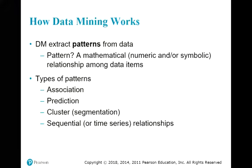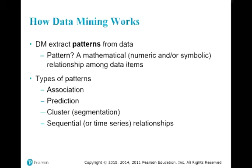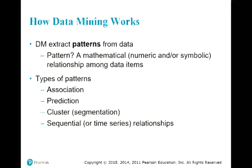So what kinds of methods are used in data mining or predictive analytics? There are basically four types. The first is association — you can also use the term correlation. There are also prediction models, and most prediction models including many econometrics models are derived from regression. We also have nonparametric methods from statistics, which derive patterns including cluster and sequential relationships that we use to predict the future.